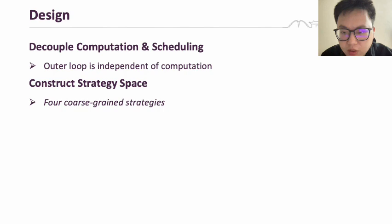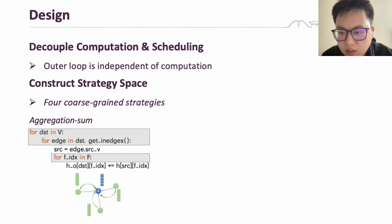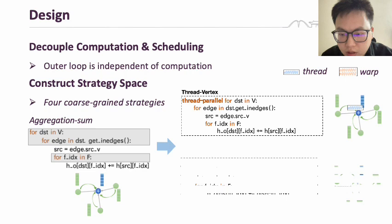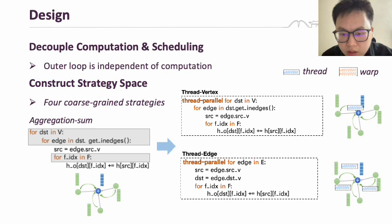Continuing with the aggregation sum operator as an example, we transform and map the for loop of aggregation sum. For example, we map each destination vertex to a thread or map each edge to a thread. Then we construct the typical graph operator execution strategies: thread vertex and thread edge.